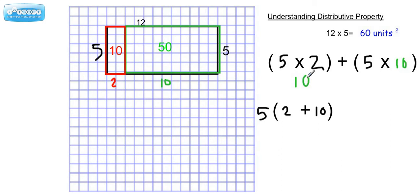5 times 2 is 10. This would be 50. And if we add these two things together, doesn't that give you 60 square units? So, we've just redistributed it. There's still the same number of square units in the entire rectangle.